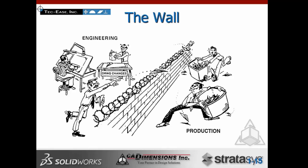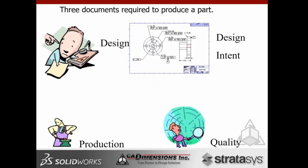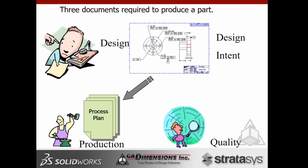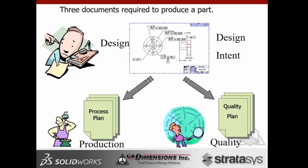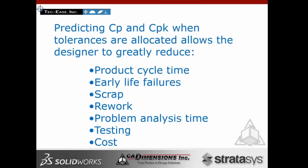We don't want to just throw drawings over the wall. We want to define CP and CPK. The drawing is going to drive the design — we need to understand exactly what tolerances to assign on the drawing. Remember, the drawing drives the process, not the other way around. There's a quality plan based on the drawing as well. We've talked about robust design and what that means. We want to predict CP and CPK, understand product cycle time, early life failures, and so forth.